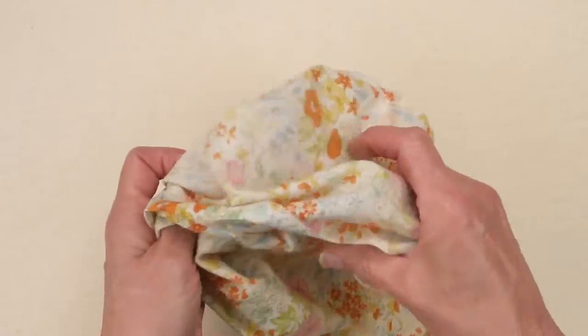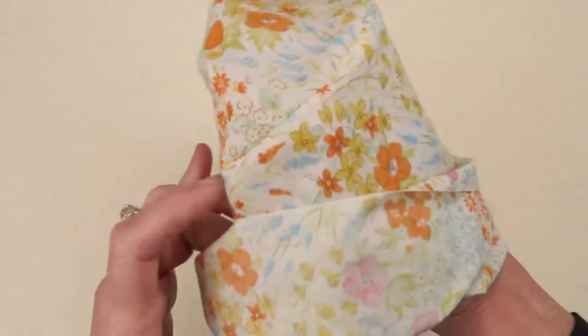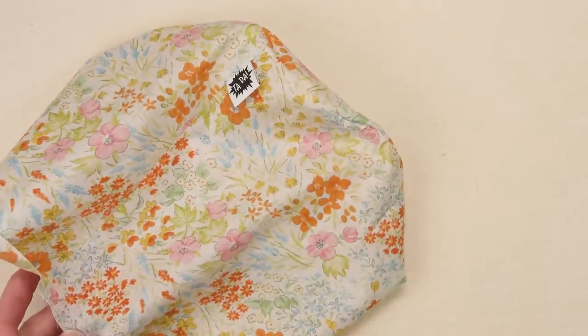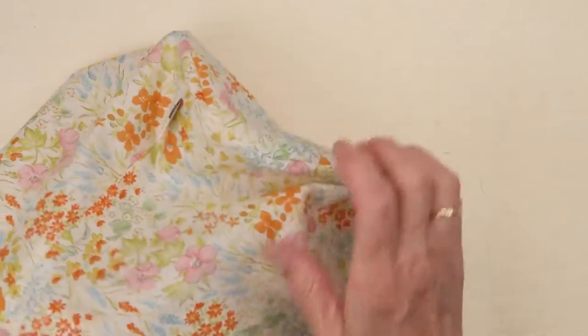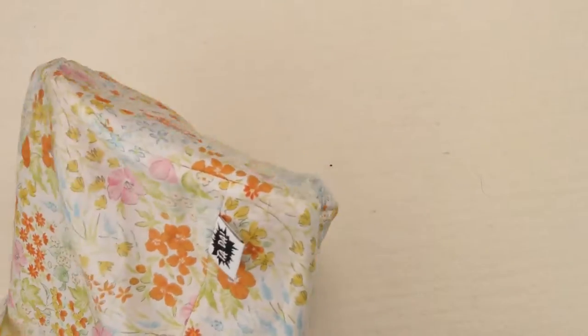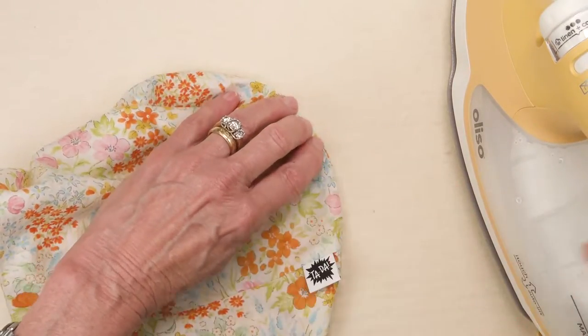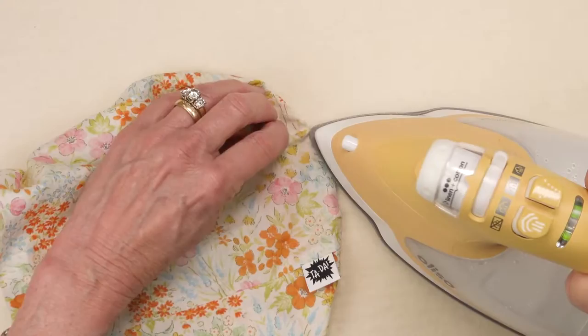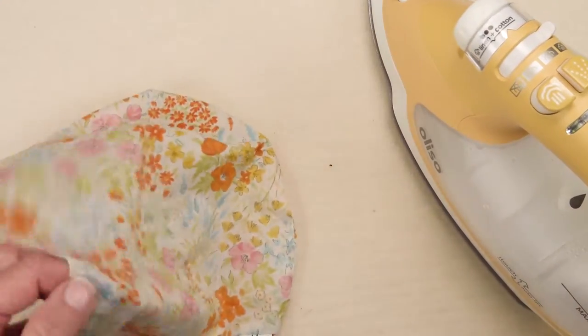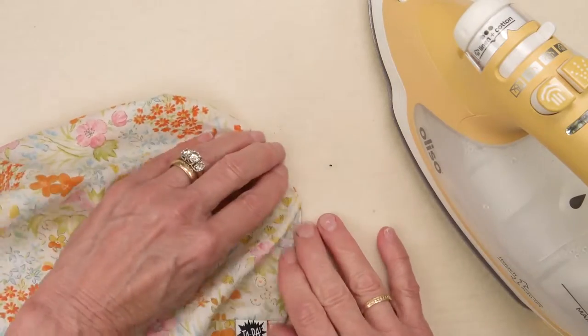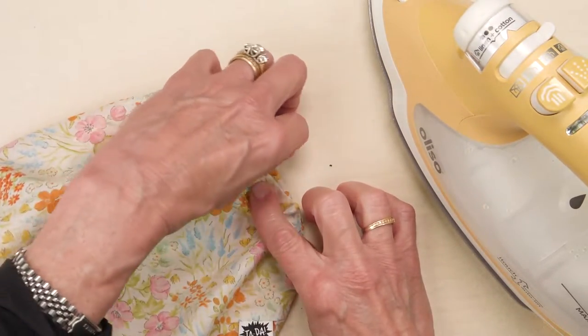This is the front of my bag. I will need to turn it right side out. And I could leave it like this, a little bit not so crisp. Or I can take my iron and press that seam just a little bit flatter.